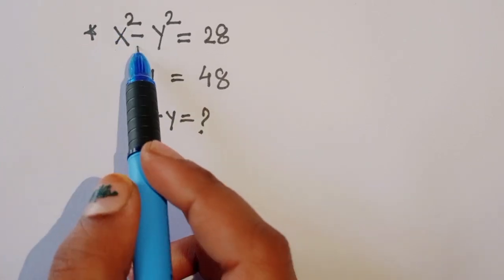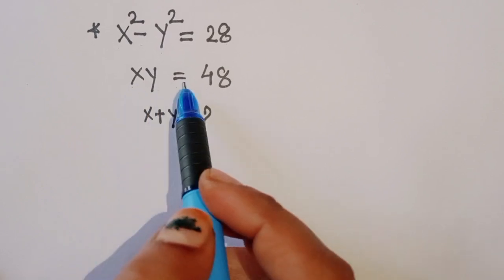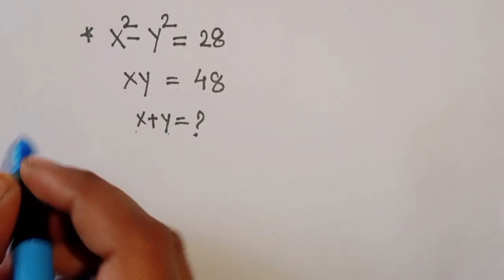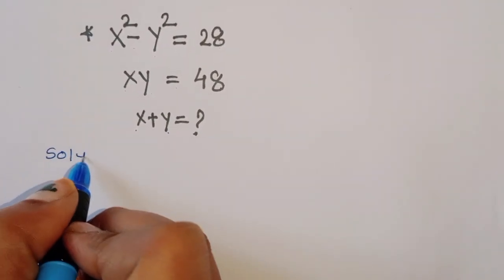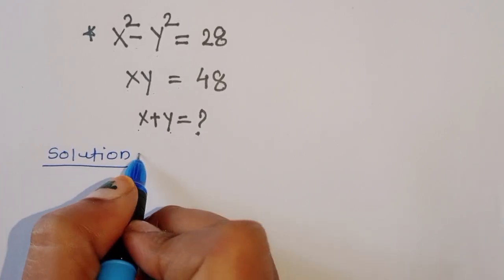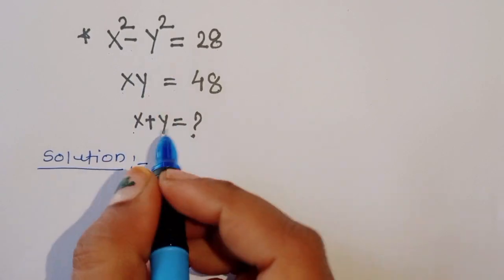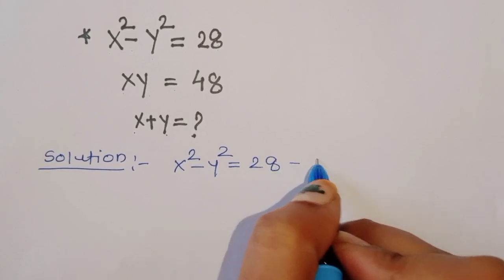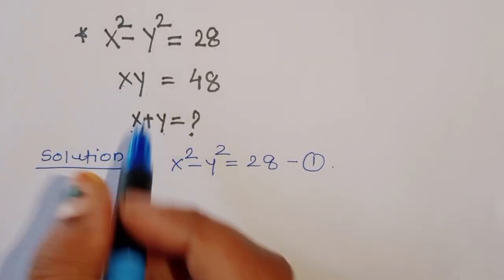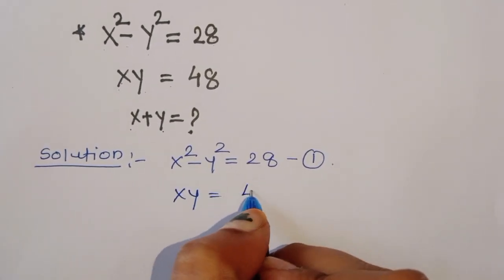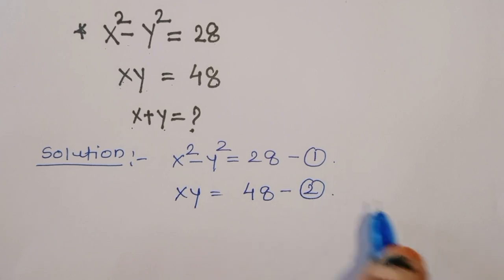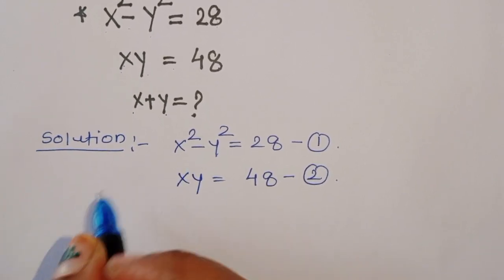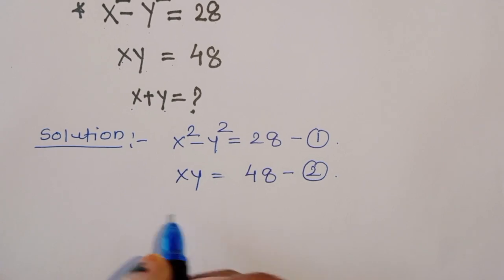The question is: given x² - y² = 28 and xy = 48, we have to find the value of x + y. Let's start the solution. What is given here: x² - y² = 28, this is equation 1. Next, xy = 48, this is equation 2.